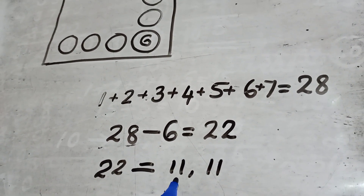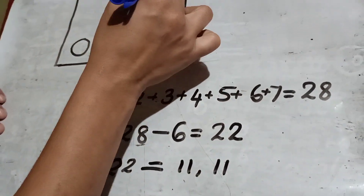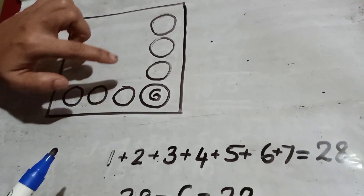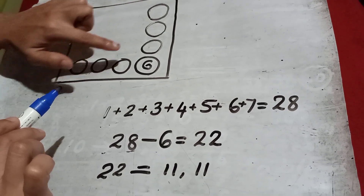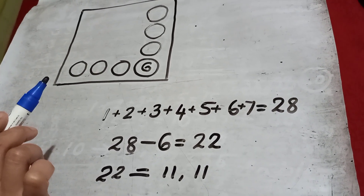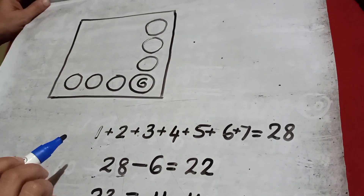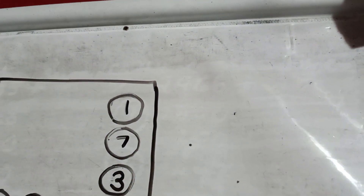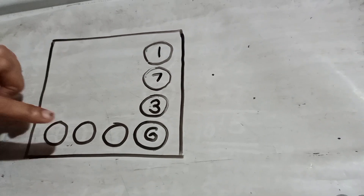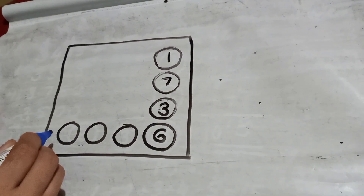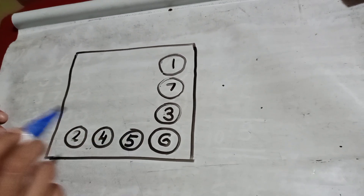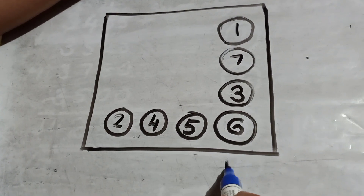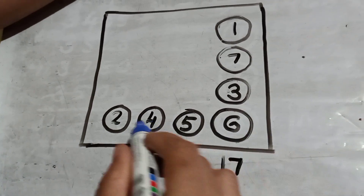Then we have to write 11 into 2 parts in different ways, because the numbers cannot be repeated. So we write 11 as 1, 7, 3 — one way. Another way: 2, 4, 5. If you add all these numbers, you will get 17 on both sides.